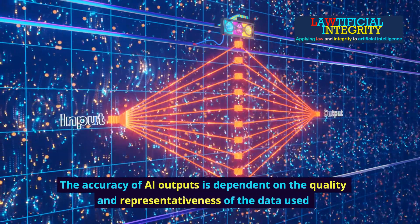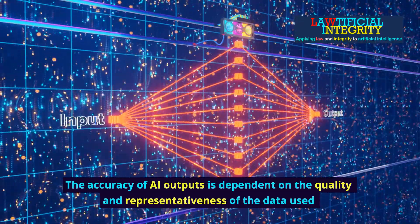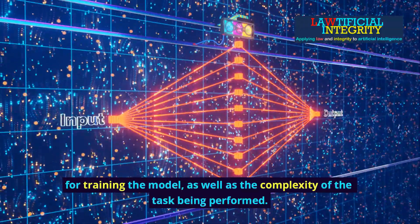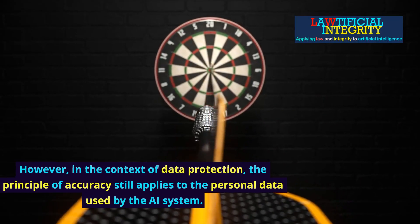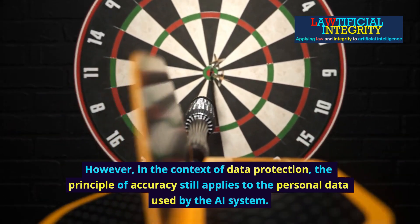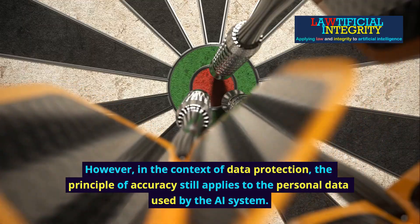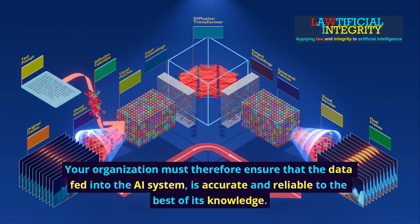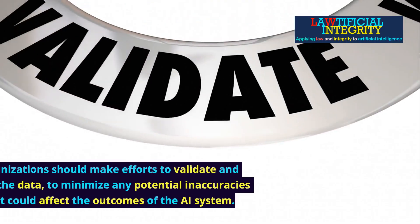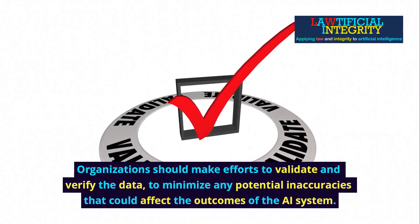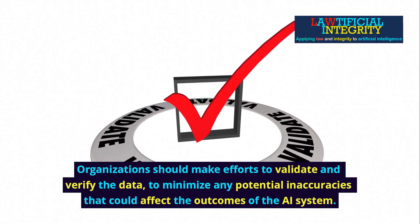The accuracy of AI outputs is dependent on the quality and representativeness of the data used for training the model, as well as the complexity of the task being performed. However, in the context of data protection, the principle of accuracy still applies to the personal data used by the AI system. Your organization must ensure that the data fed into the AI system is accurate and reliable, and should make efforts to validate and verify the data to minimize any potential inaccuracies that could affect the outcomes of the AI system.